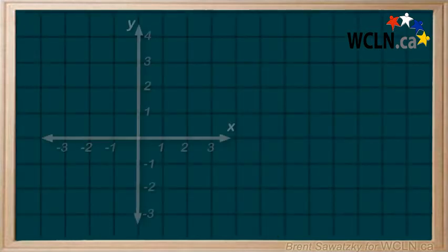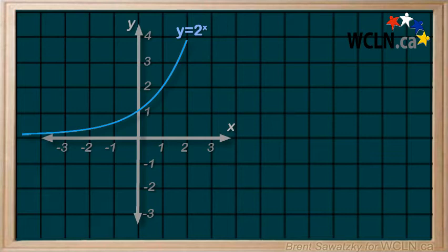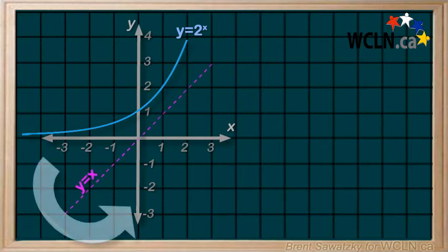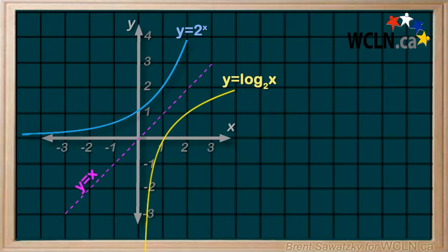Switching our consideration of inverse functions into a graphical sense, we recall that if our function looks like this, an example of an exponential growth function, the inverse would simply be a reflection around the line y equals x. And it looks like this, the inverse of our exponential growth function. And this is our log function, y equals log base 2 of x.